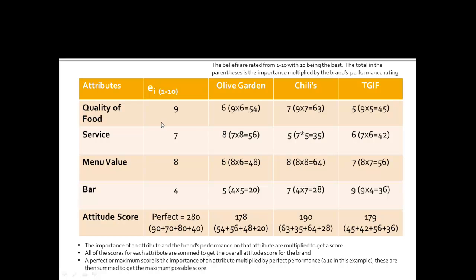When we look at TGIF, for quality of food they only got a 5, so 5 × 9 = 45 points — the fewest of the three. They did okay on service with a 6, so 6 × 7 = 42 points. They did pretty well in menu value with a 7, giving 8 × 7 = 56 points. For the bar, they got a 9 — the highest score there — so 4 × 9 = 36 points. Adding 45 + 42 + 56 + 36, they got 179 points — a little better than Olive Garden but pretty much the same.